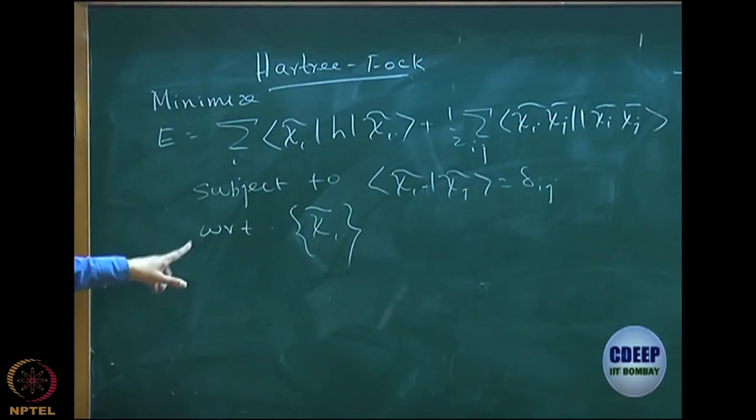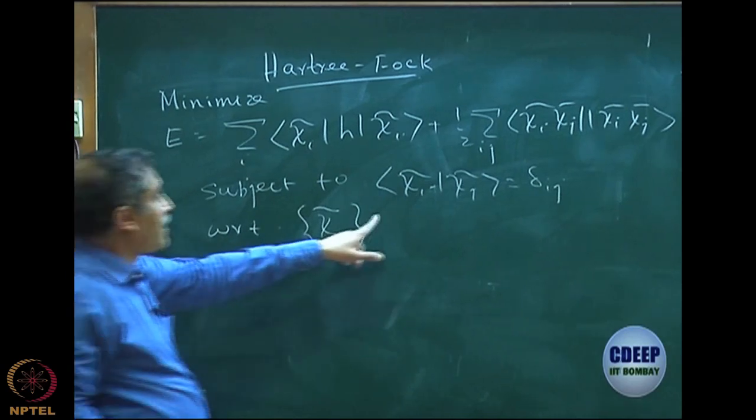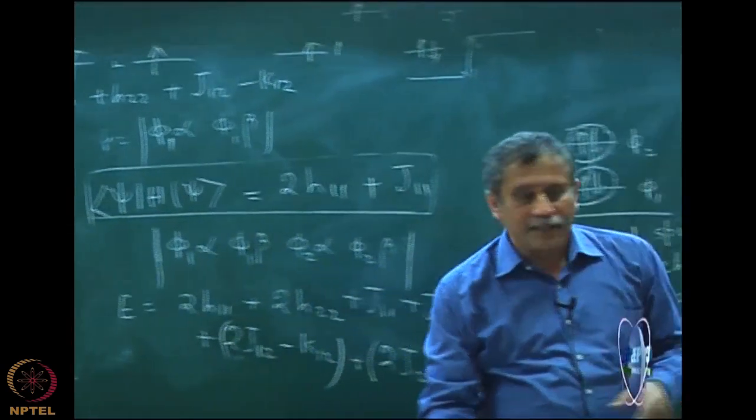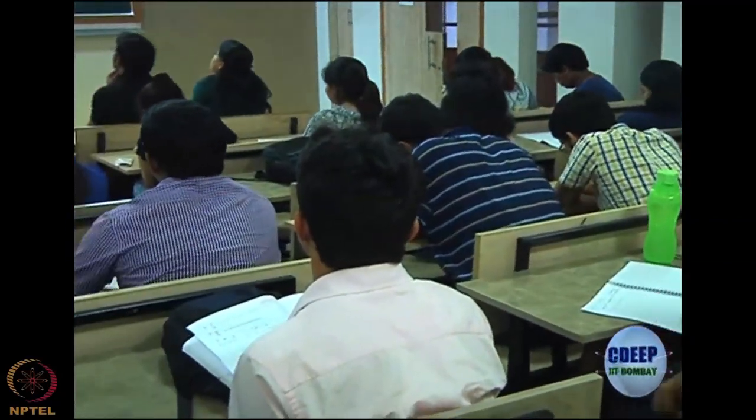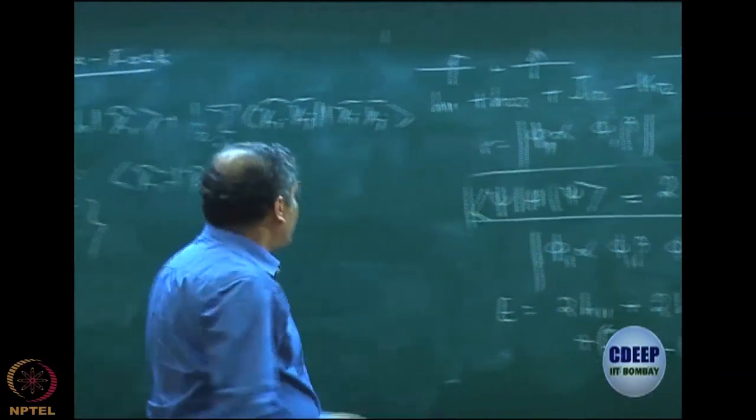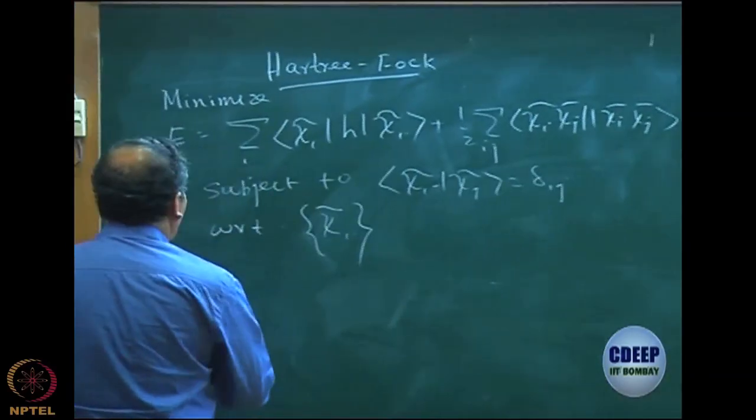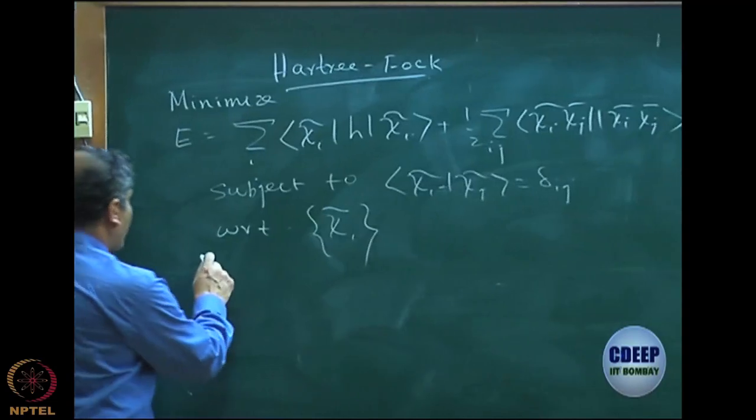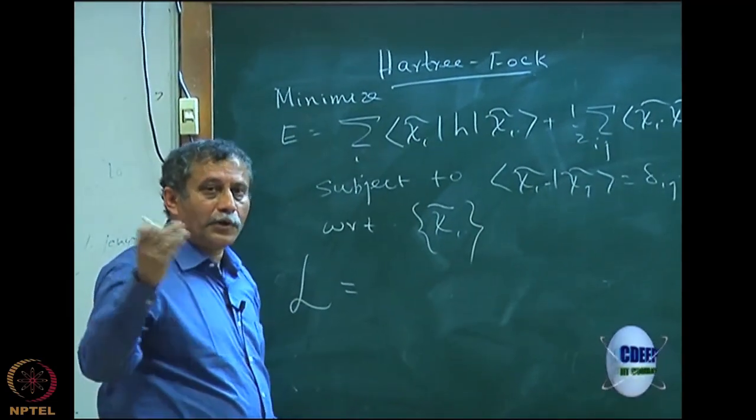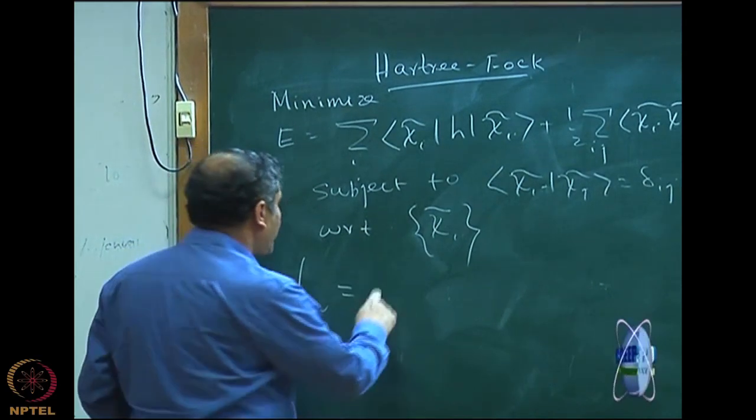So, how do I do this? So, remember, it is a conditional variation because I have this chi i tilde, chi j tilde minus delta i j equal to 0. So, it is a conditional thing. So, how do I do a conditional variation? I construct a Lagrangian. I hope all of you know this. It is a subject to this variation.